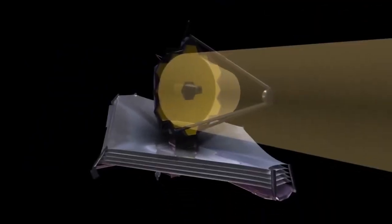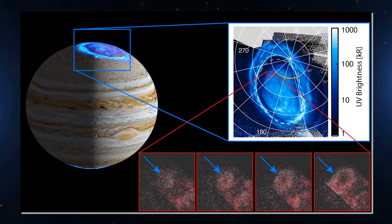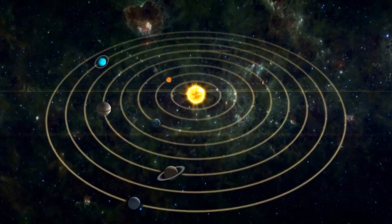Webb's infrared picture also shows that both poles of Jupiter are lit up by auroras. Auroras are colorful light shows that don't just happen on Earth. NASA says that the auroras on Jupiter are the most powerful in the solar system.